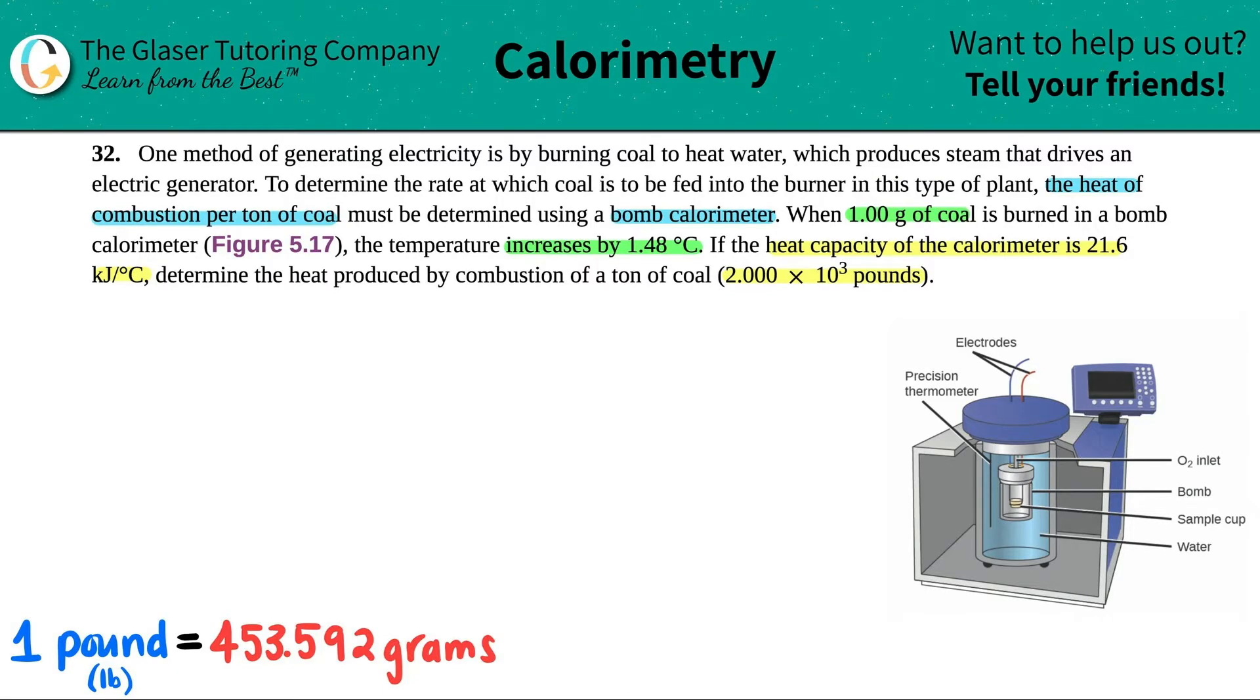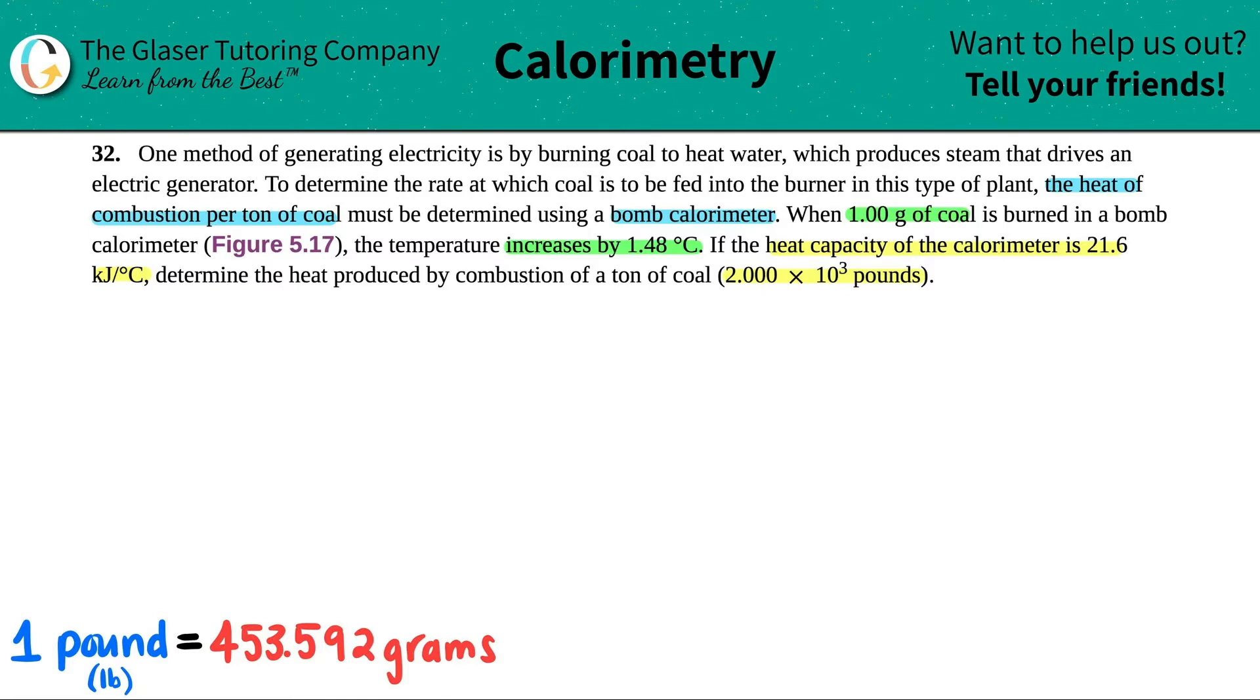Okay. So first things first, they tell you to look at figure 5.17 to see what's going on here. So I just put this over here. This is what a bomb calorimeter looks like. It's basically this huge piece of equipment that can tell you how much energy is produced by feeding it X amount of mass of a certain substance. Do we really need this piece of information to answer this question? Absolutely not. So goodbye. That was simple as that.